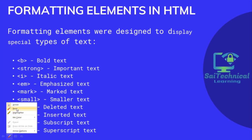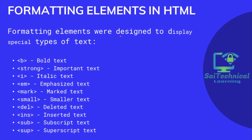Formatting elements in HTML were designed to display special types of text. Bold text uses the b tag; important text uses the strong tag; italic text uses the i tag; emphasized text uses the em tag; marked text uses the mark element; smaller text uses the small tag; deleted text uses the del tag; inserted text uses the ins tag; subscript uses the sub tag; and superscript uses the sup tag.